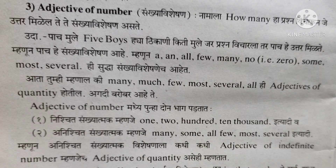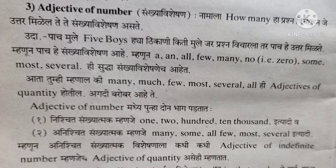The first Guna Visheshana — when we think about it, the answer relates to Sankhya Visheshana (Numeral Adjective). There are two subtypes: first, Nishchit Sankhyatmak (Definite Numeral) — for example, 1, 100, 200, etc. Second, Anishchit Sankhyatmak (Indefinite Numeral) — meaning an unspecified quantity.